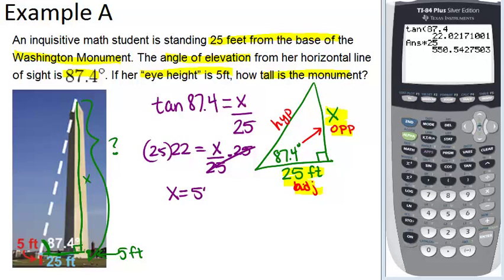So X equals 550 feet approximately. So that means that the total height must be 555 because we have to add in that 5 feet that was from the ground up to the eye height.